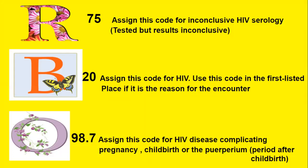R75 is assigned for inconclusive HIV serology — tested but results inconclusive. If you go to the R section of your ICD-10, at the back of the R's there are all kinds of abnormal or inconclusive test results. B20 is assigned for HIV disease and should be the first listed code if HIV is the reason for the encounter. If a patient comes in for a broken foot unrelated to HIV, you would use the broken foot code first.